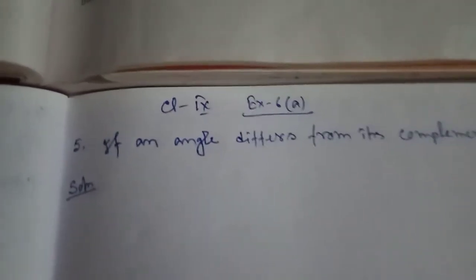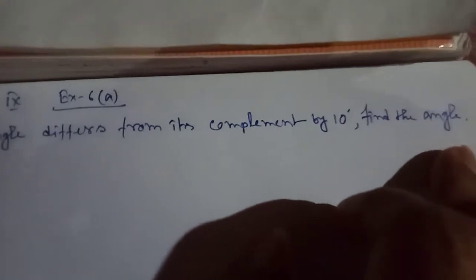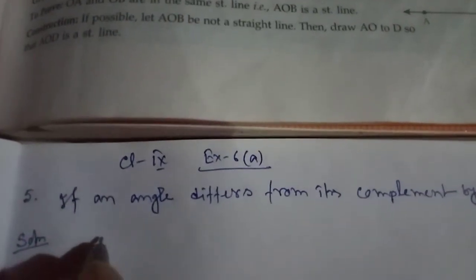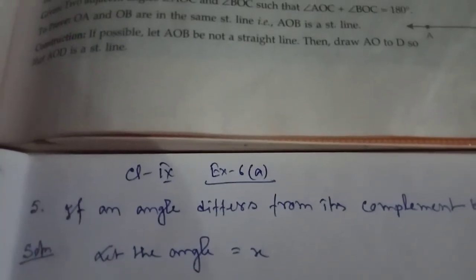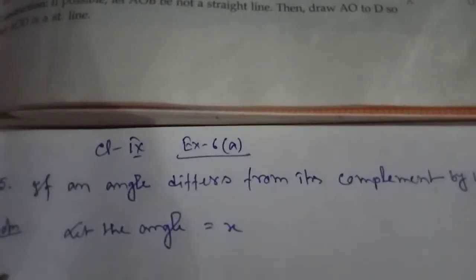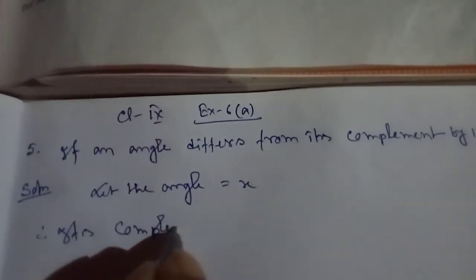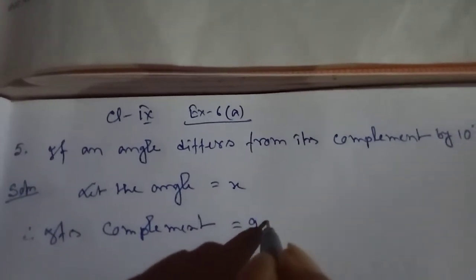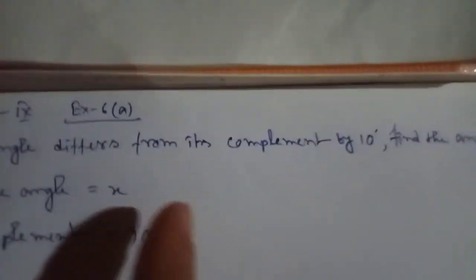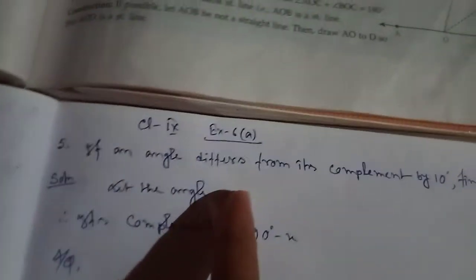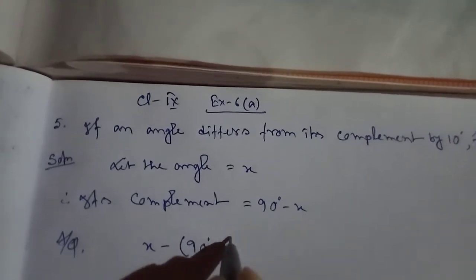Let us take question number 5: if an angle differs from its complement by 10 degrees, find the angle. Since we don't know the angle, we let the angle equal to x. Its complement is therefore 90 degrees minus x. The difference between the angle and its complement means subtract: 90 minus x.